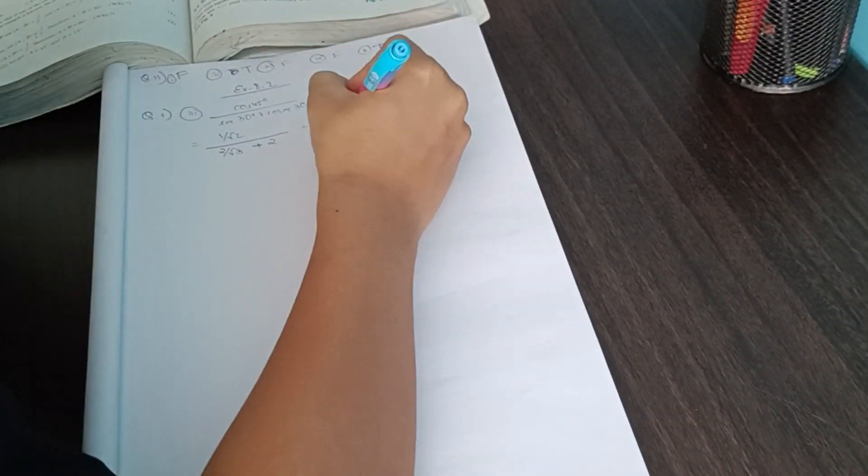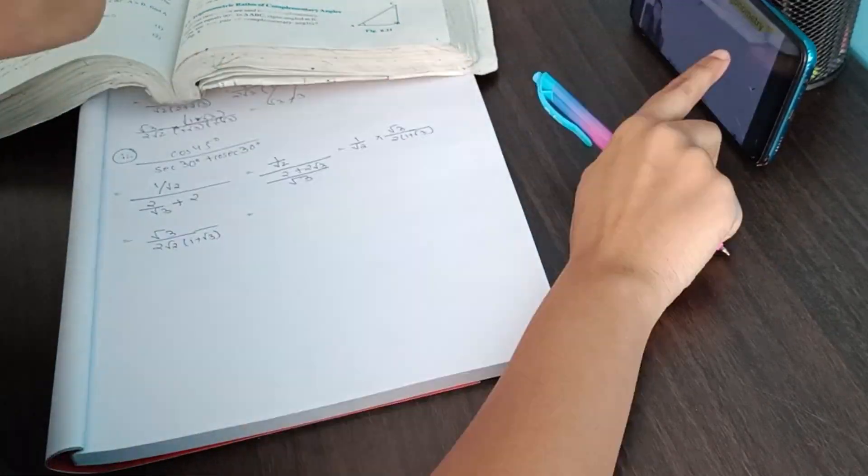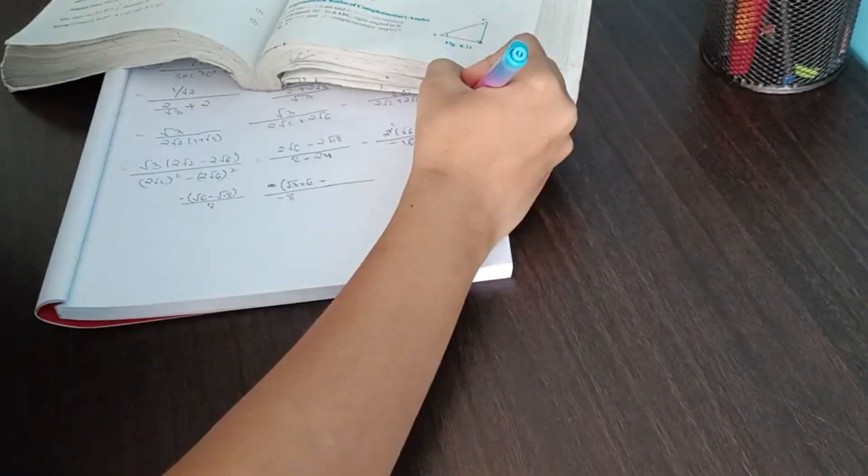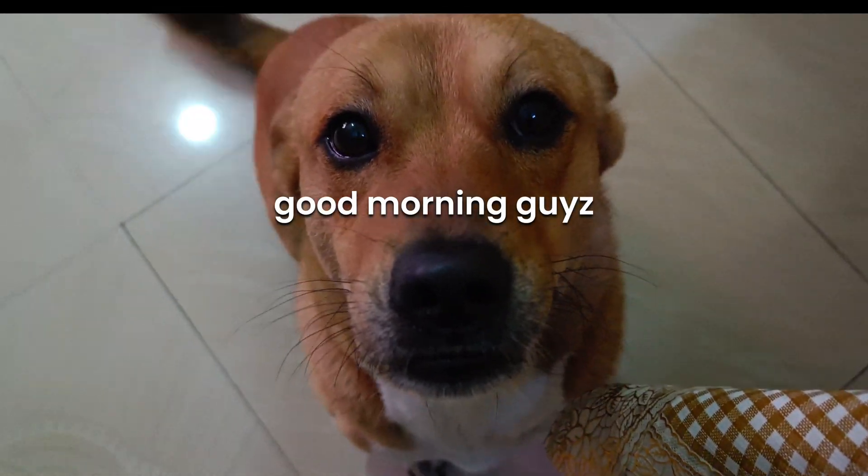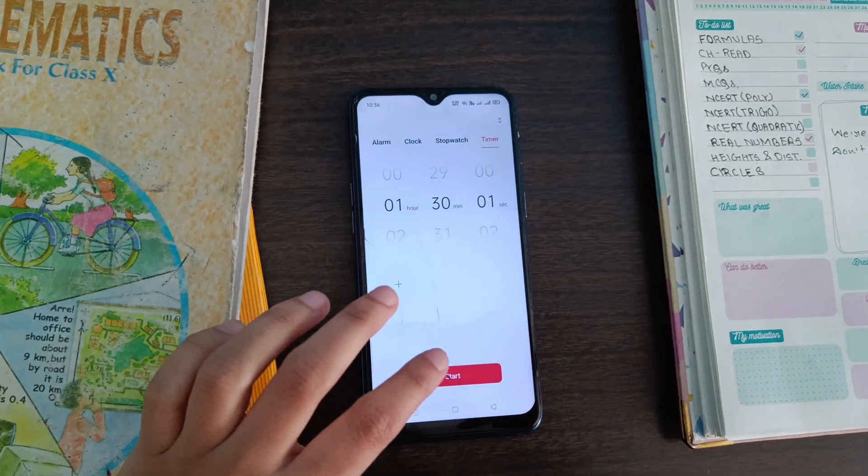So once the live session gets over, then only I will start solving PYQs from that particular session. And usually after coming back from the center and taking a good rest, I do the easy topics, but yesterday I did not do anything, so that's why I'm going to do the MCQs today. Currently 10:36 AM, now I'll place a timer of one hour 30 minutes.